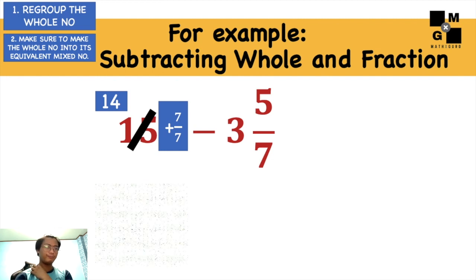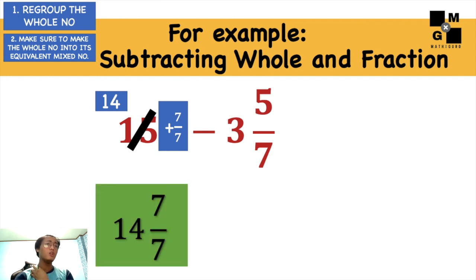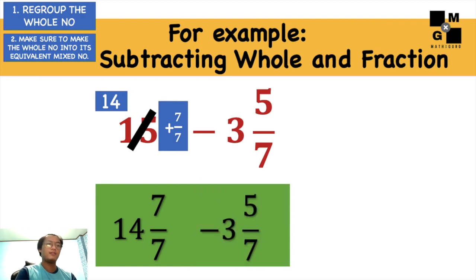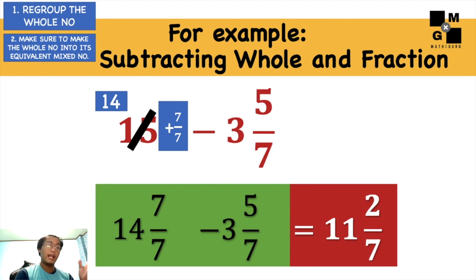Next, the first whole number given is now equal to 14 and 7 over 7. So we can see that 15 is equivalent to that mixed number, 14 and 7/7. Next, minus 3 and 5/7. 14 minus 3 is equal to 11. 7 minus 5 is equal to 2, and then over 7. Final answer is 11 and 2/7.